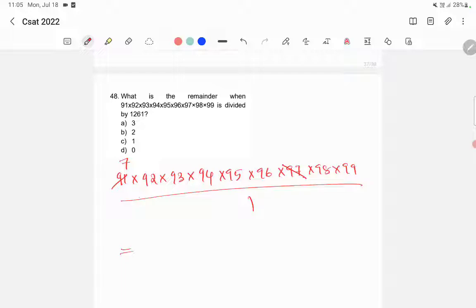The numerator is exactly divisible by the denominator, right? That means the remainder is 0, so option D is the correct answer.